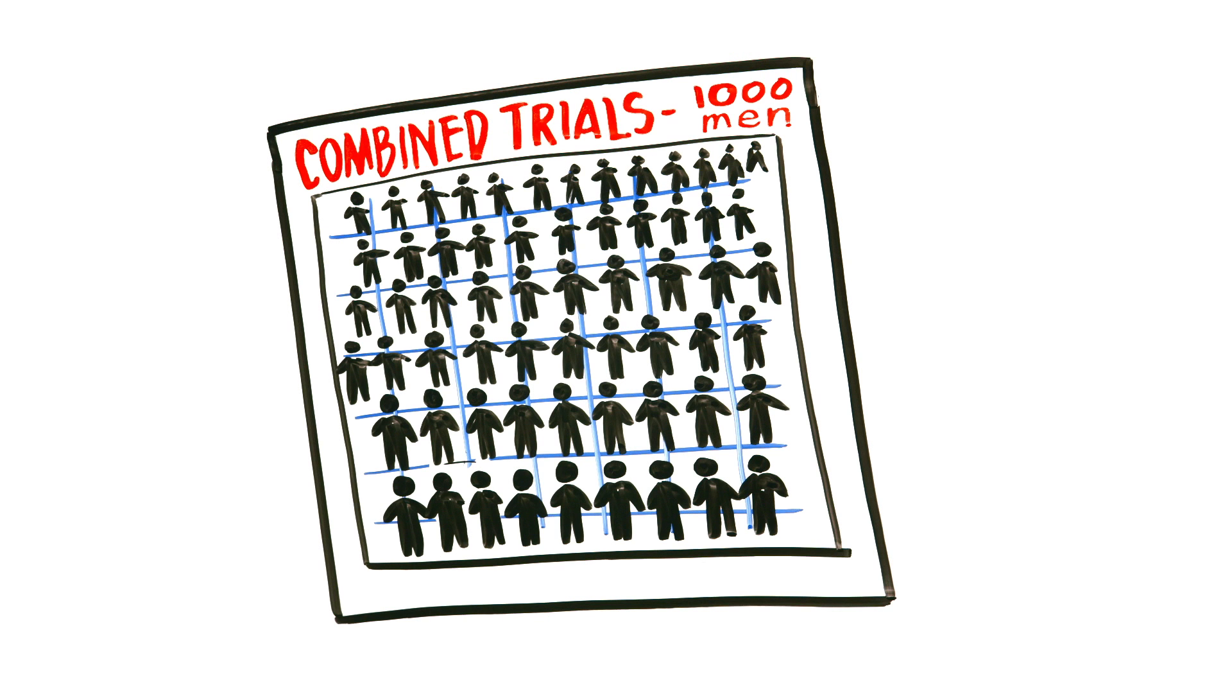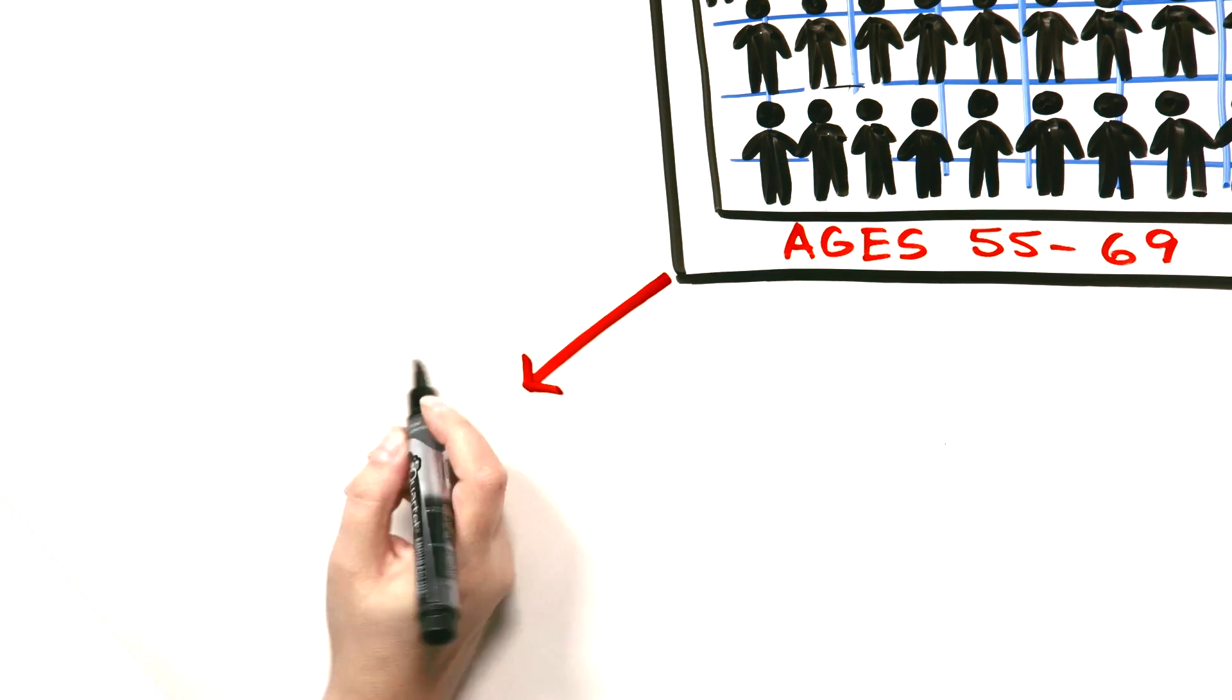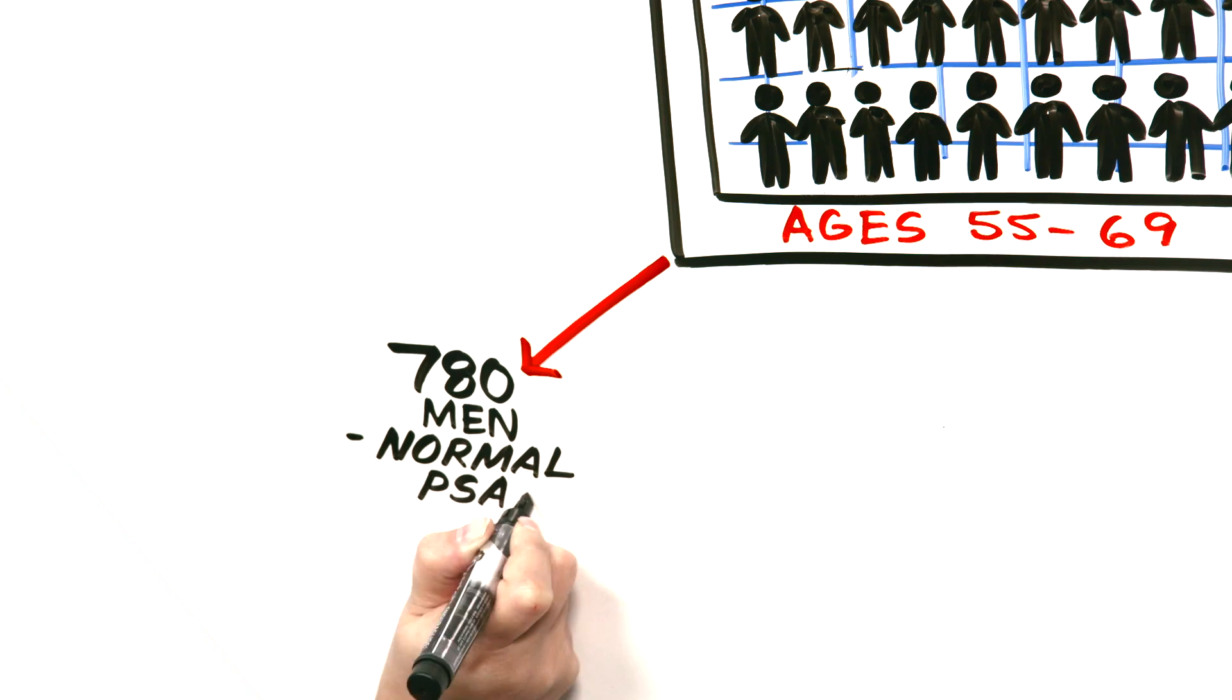If 1,000 men aged 55 to 69 were screened with PSA every 1 to 4 years for about 10 years, approximately 780 men would have normal PSAs. This is good news and would be reassuring to these men.